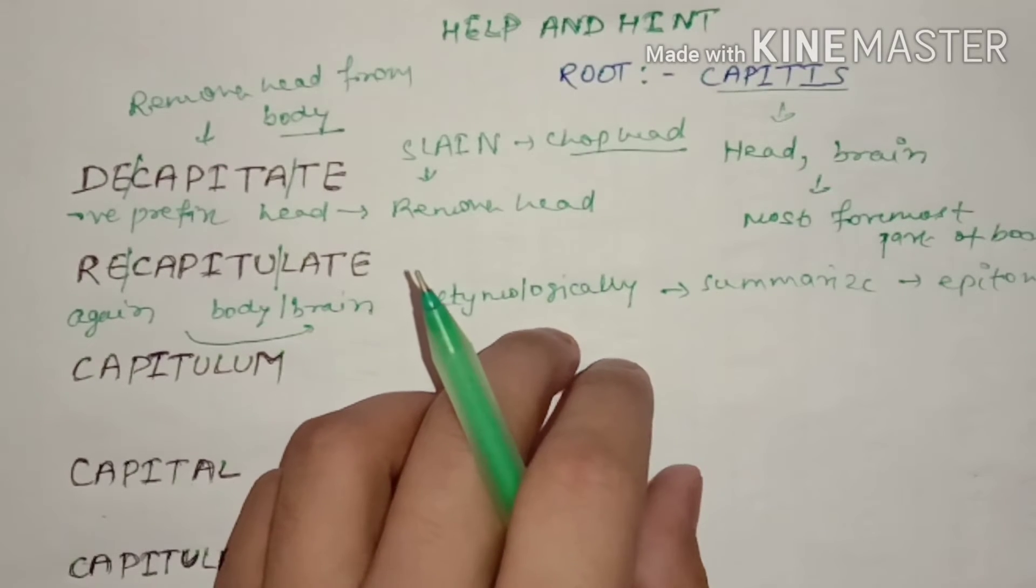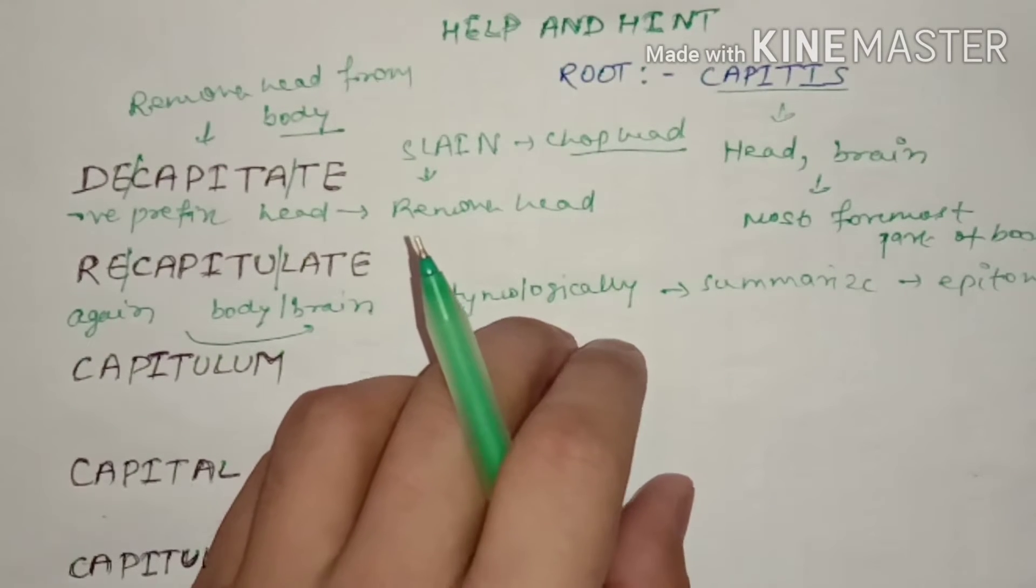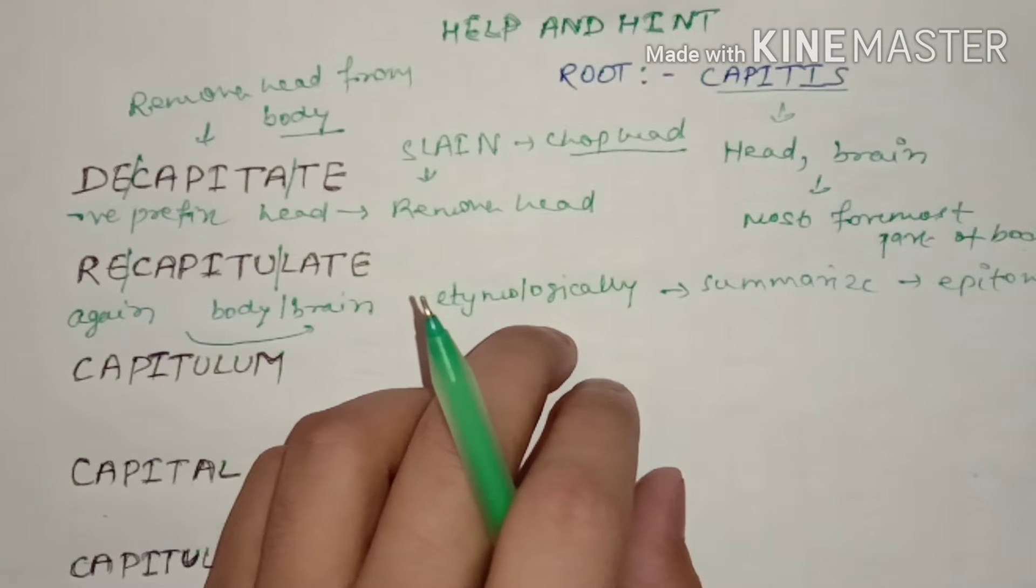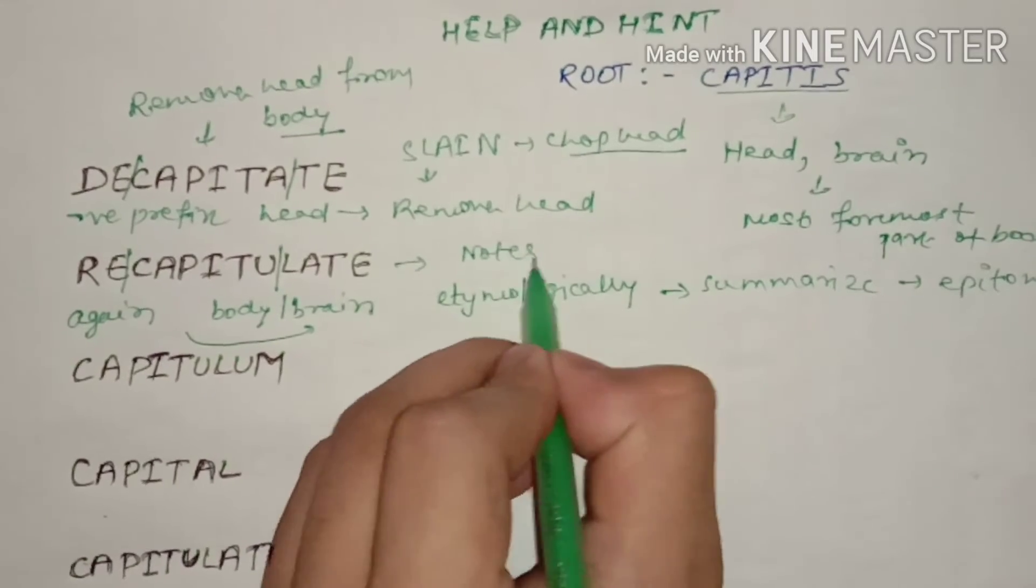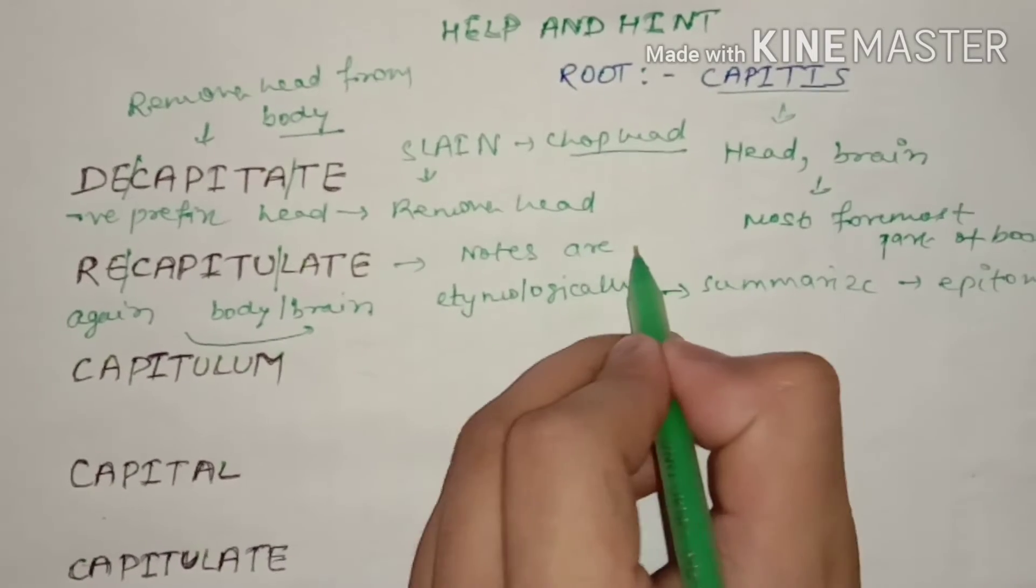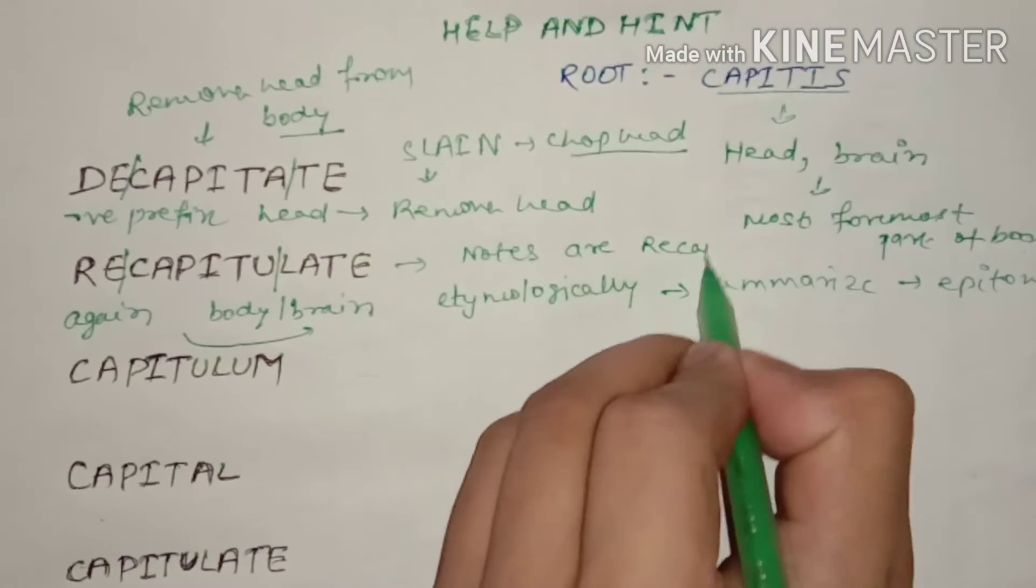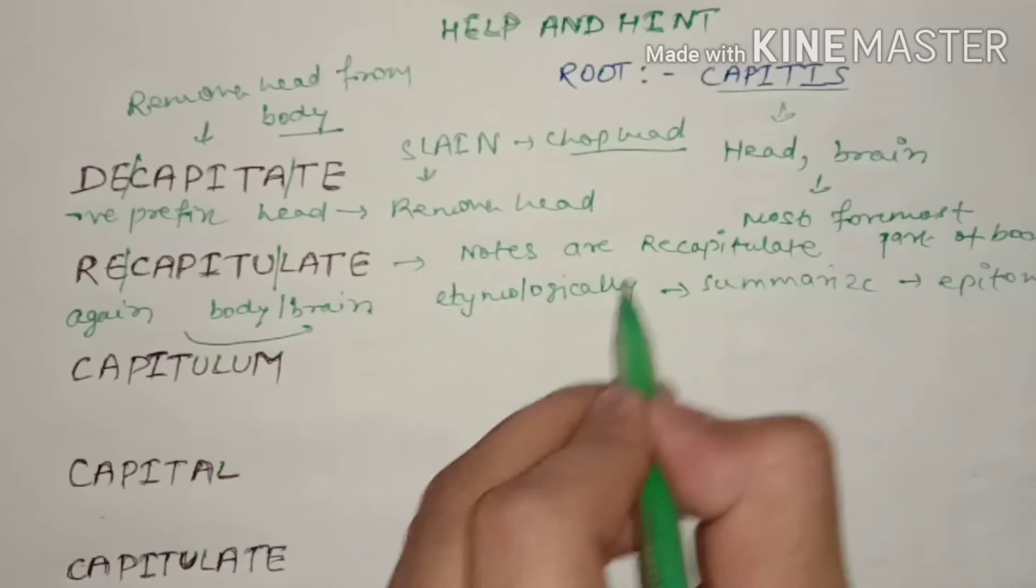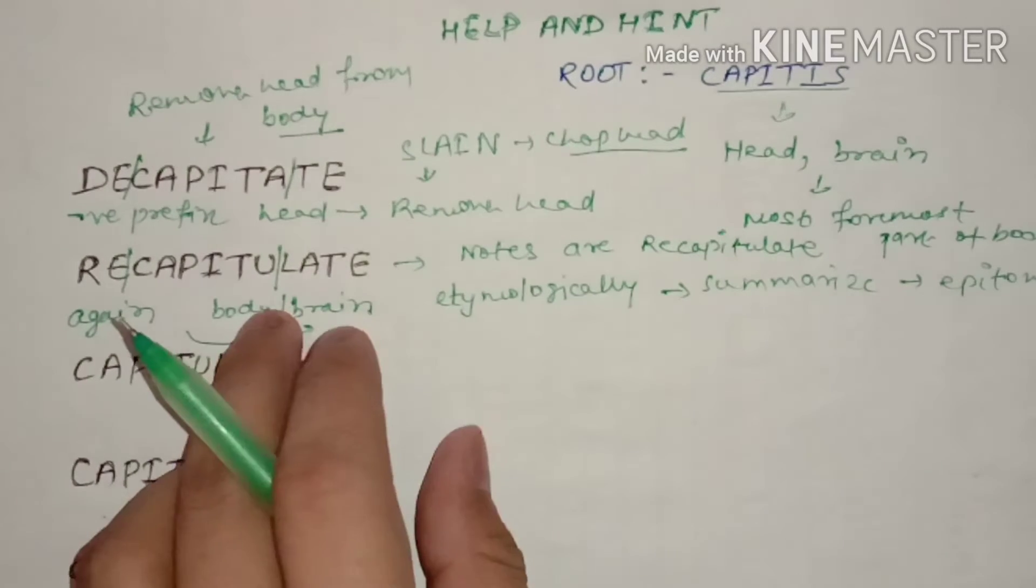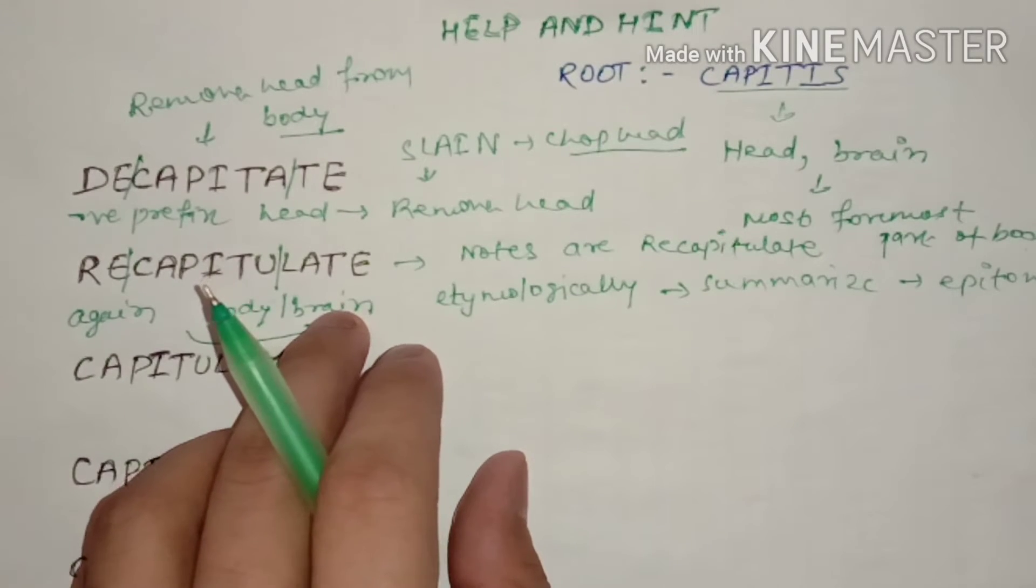You have a large number of words and sentences and you have to precise them, you have to say it to someone in very few words. Then you recapitulate. Notes you make, notes are recapitulated. So they are summarized. To recapitulate means to summarize, to precise something.